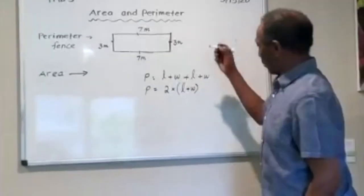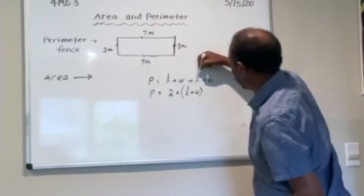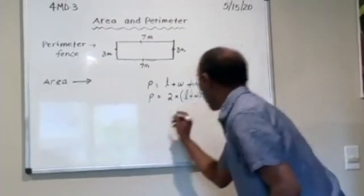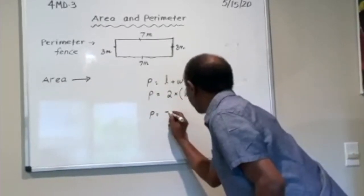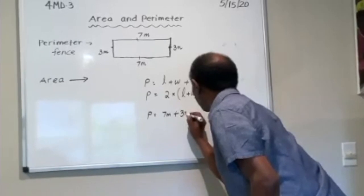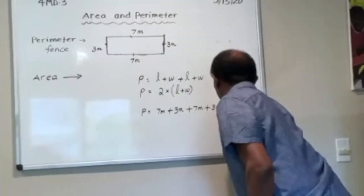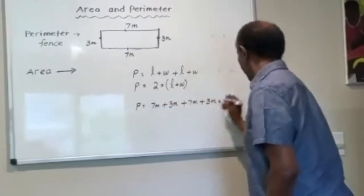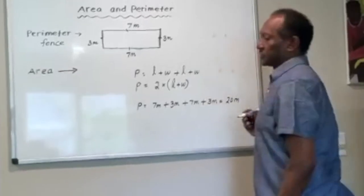Let's use the first formula. I know one of the lengths is seven. We have two sevens and we have two threes. So perimeter equals seven meters plus three meters plus seven meters plus three meters.